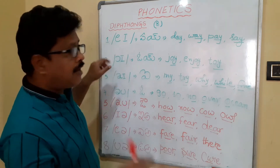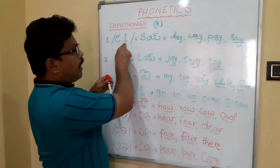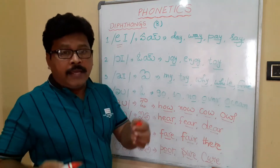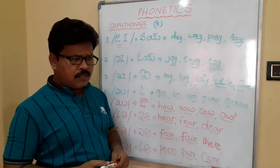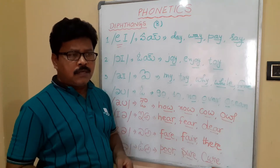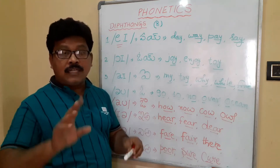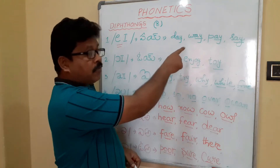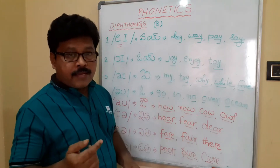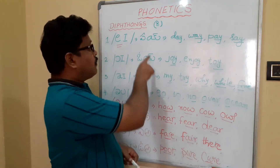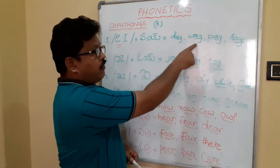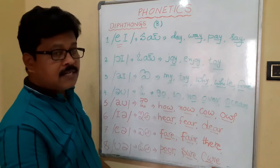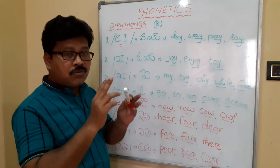The first diphthong: if you write E and I together, this is called the /eɪ/ sound. For example, how you call a person — 'A, Babhu' — that is the /eɪ/ sound. Examples where it occurs: day, way, pay, say, holiday, working day, Sunday, Monday.